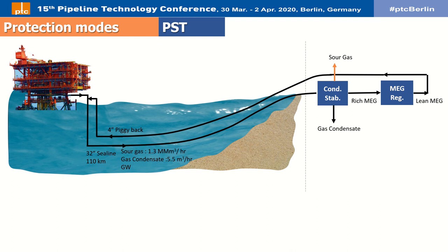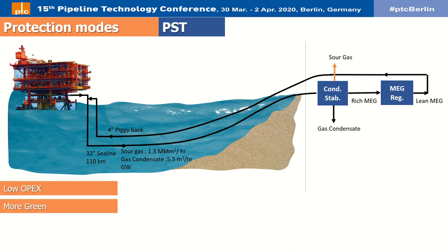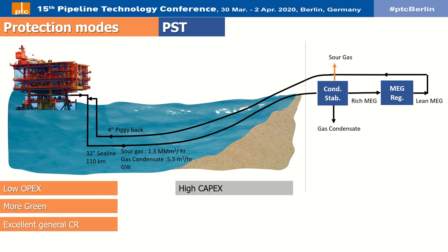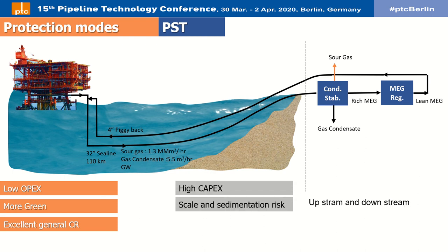This technique is called the pH stabilization technique, or PST. Briefly, this method has low operating expenditure, is more environmentally green, and results in excellent general corrosion rates. However, it requires high capital investment and during operation carries a higher risk of scaling and top-of-line corrosion.